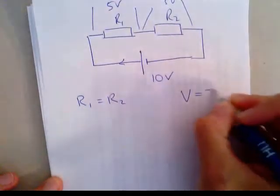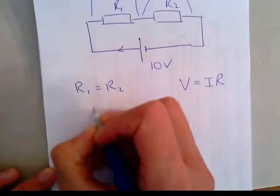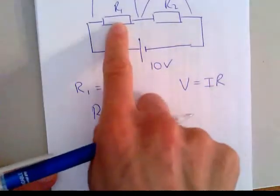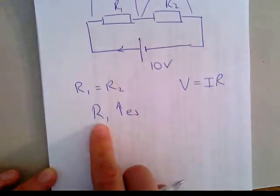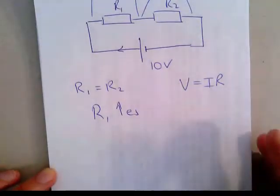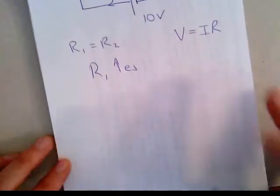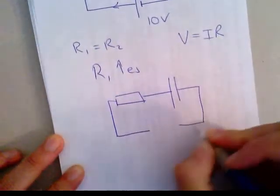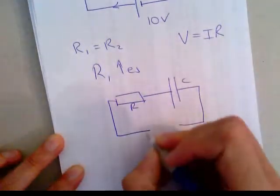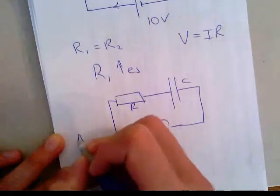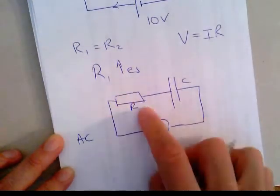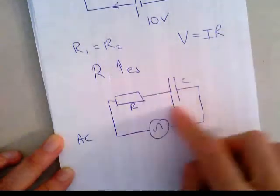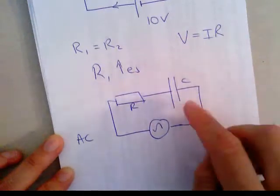You know that V equals IR from Ohm's law. So if R1 were to increase significantly, then the majority of the voltage will be dropped across R1 instead of R2, because voltage is proportional to resistance. So what happens when we have a resistor in combination with a capacitor? This is what we call an RC circuit. We have an AC signal going in, a resistor whose resistance never changes with frequency, and a capacitor.